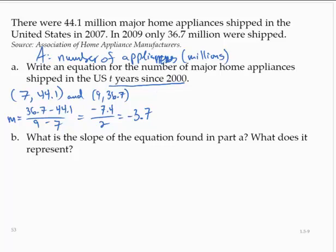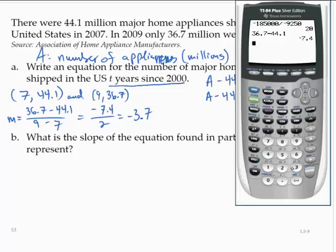So now, using the negative 3.7 and one of the points, I can write that A minus 44.1 is equal to negative 3.7 times (x minus 7). So A minus 44.1 is equal to negative 3.7x plus... Negative times a negative is a positive, and 3.7 times 7 is 25.9.